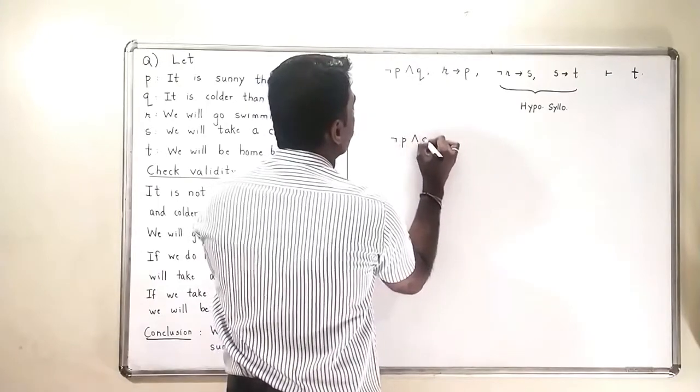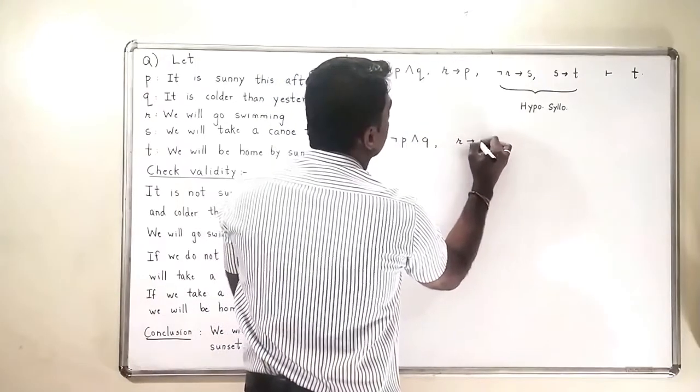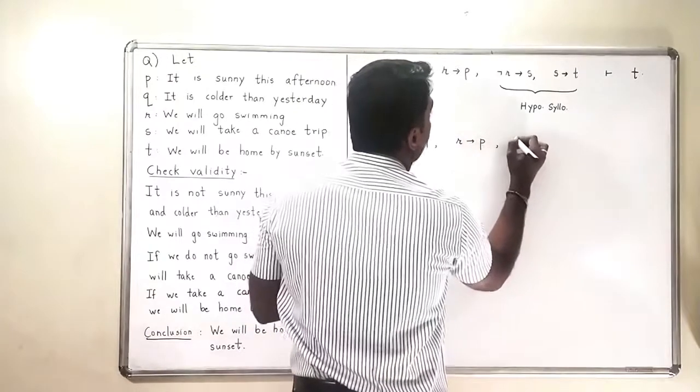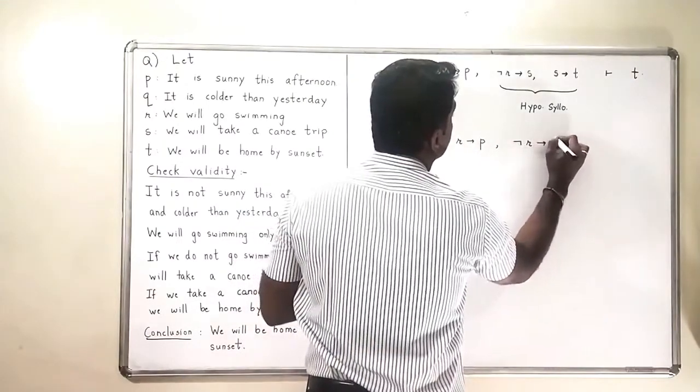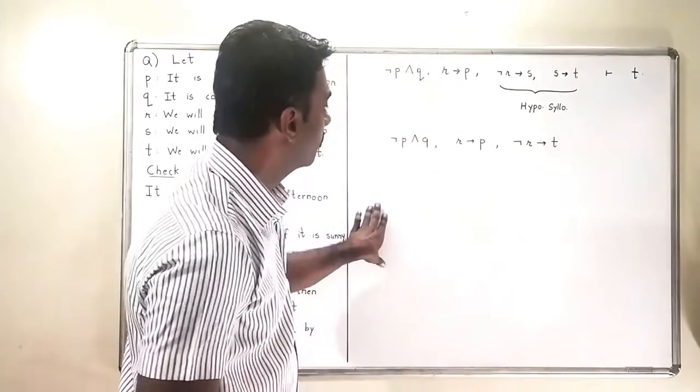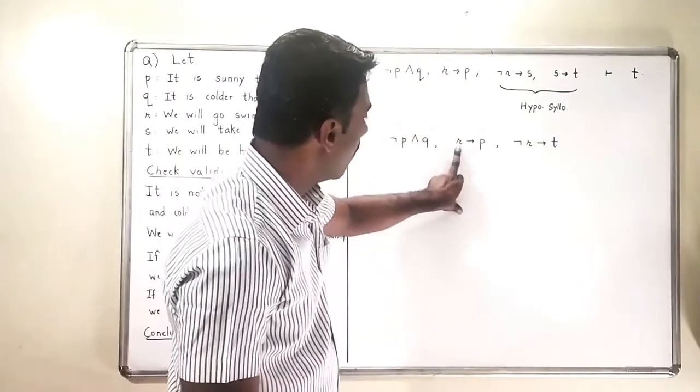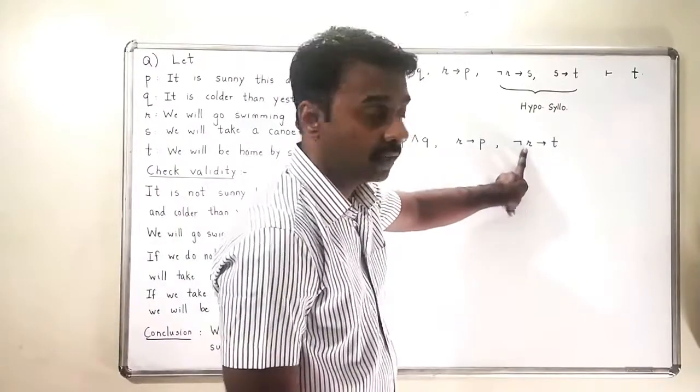So these two arguments I am going to keep as is: negation P and Q, R implies P. And here I will get negation R implies T. Now I know there is R here and negation R here also.